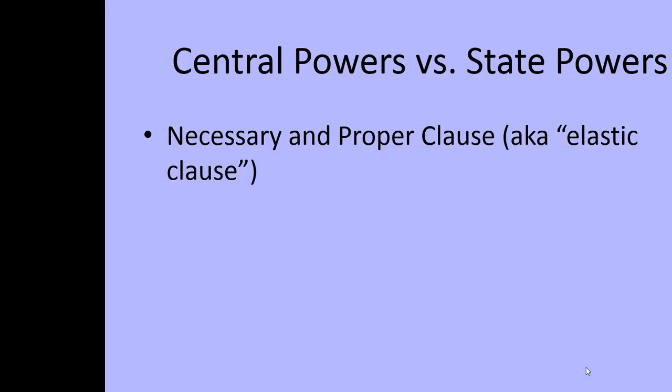The Constitution included something called the Necessary and Proper Clause, also known as the Elastic Clause. This gave the central government some flexibility over time — they could add new laws that were deemed necessary and proper.